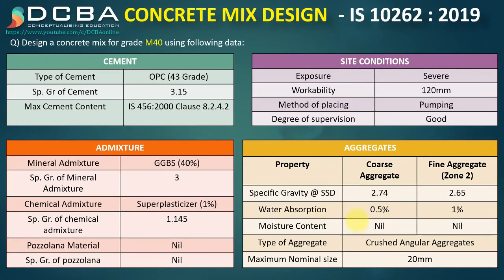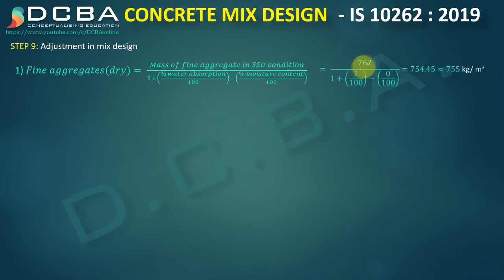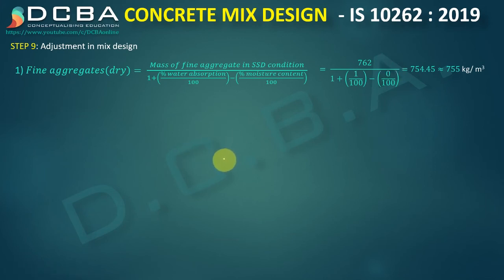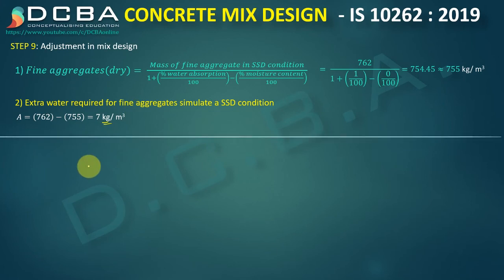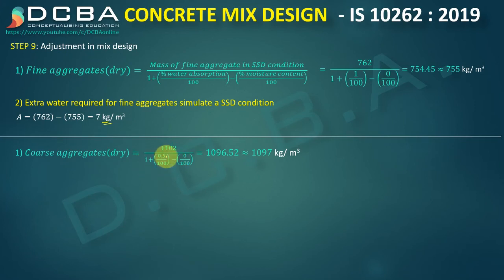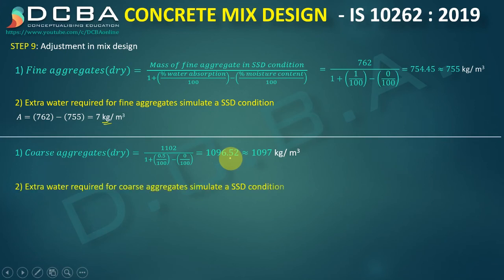Fine aggregate: water absorption 1%, moisture content 0%. Actual mass = 762 / [1 + 0.01 − 0] = 754.45 ≈ 755 kg/m³. Extra water required = 762 − 755 = 7 kg/m³. Coarse aggregate: water absorption 0.5%, moisture content 0%. Actual mass = 1102 / [1 + 0.005 − 0] = 1096.52 ≈ 1097 kg/m³. Extra water required = 1102 − 1097 = 5 kg/m³.